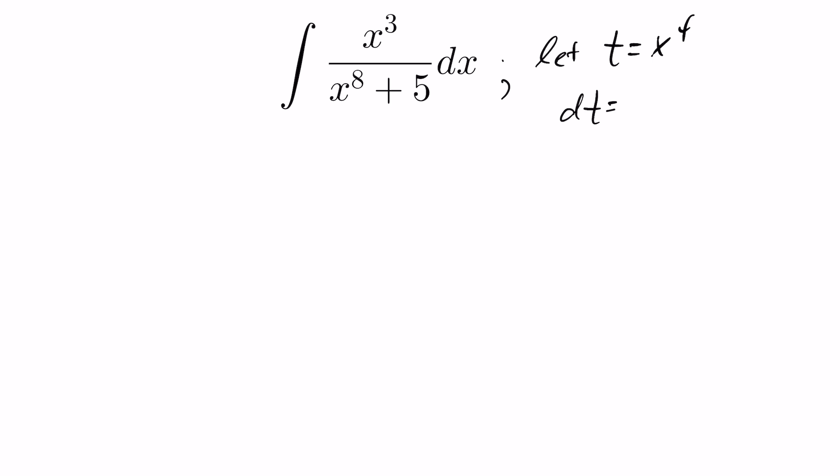This becomes dt is 4x cubed dx. So therefore, 1 quarter dt would equal x cubed dx. So that's kind of lucky here, these line up quite nicely. So I can change this integral to 1 quarter, put the dt there. And since t equals x to the power of 4, this would be t squared plus 5.